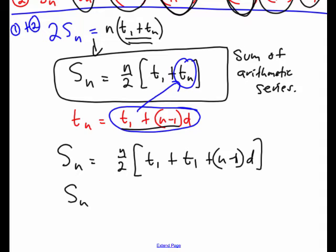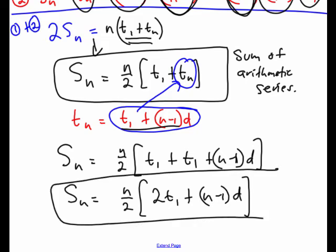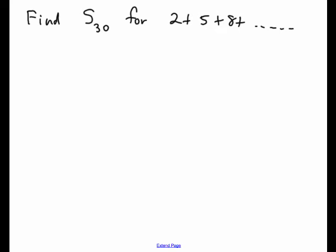And so that reduces to n over 2, term 1 plus term 1, two term 1s plus n minus 1d. And so we have a second formula now for the sum of an arithmetic series. So we have two formulas for finding the sum of an arithmetic series.